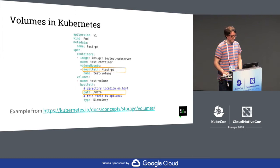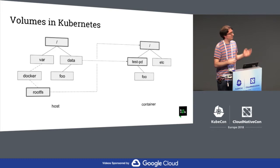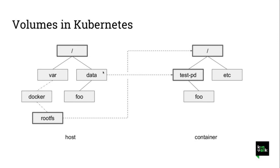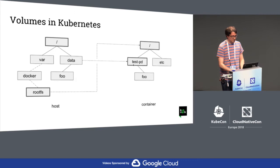In Kubernetes we can mount volumes. In this example I take a directory on the host, slash data, and it will mount it inside the container at this path, slash test.pd. That's an example from the Kubernetes documentation. On the left you have the tree directory on the host, and on the right you are in the container. So you have the rootfs of the container, which is mapped to slash in the container, and the volume that we wanted to mount at this path is available here.